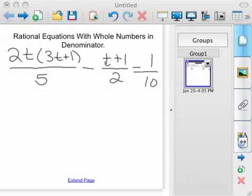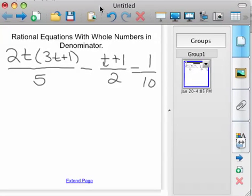The first step in this process—there's probably several ways you can go about this—but the first step is you want to get a common denominator. And so between 5, 2, and 10, your common denominator would be 10.